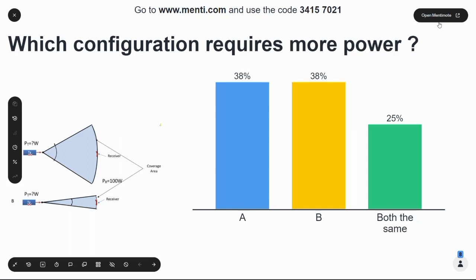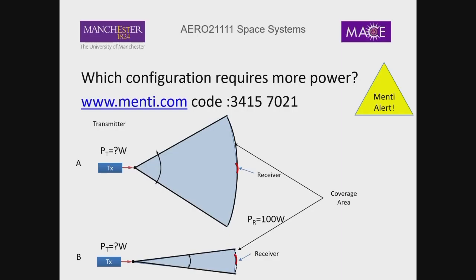Whereas A is trying to give wider coverage, so it needs more power to cover that area. Today we're going to analyse this more analytically. We're finishing off our look at communications and focusing on the link budget.